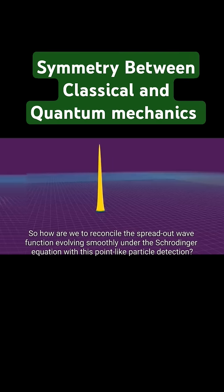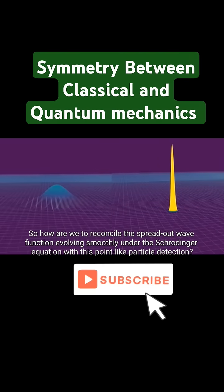So how are we to reconcile the spread-out wave function evolving smoothly under the Schrodinger equation with this point-like particle detection?